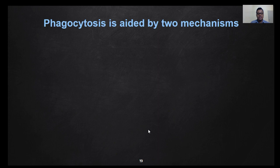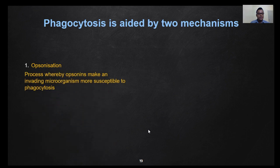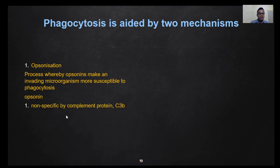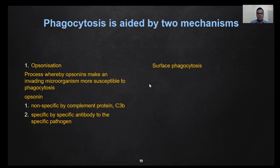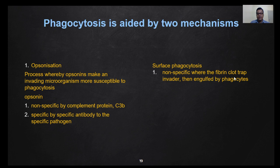Phagocytosis is helped by two mechanisms. First is opsonization — a process whereby opsonins make an invading microorganism more susceptible to phagocytosis. They weaken the microorganism. Opsonins include non-specific ones such as complement protein C3b, or specific ones such as specific antibodies to the specific pathogen. The second mechanism is surface phagocytosis, a non-specific process where a fibrin clot traps the invader, which is then engulfed by phagocytes.